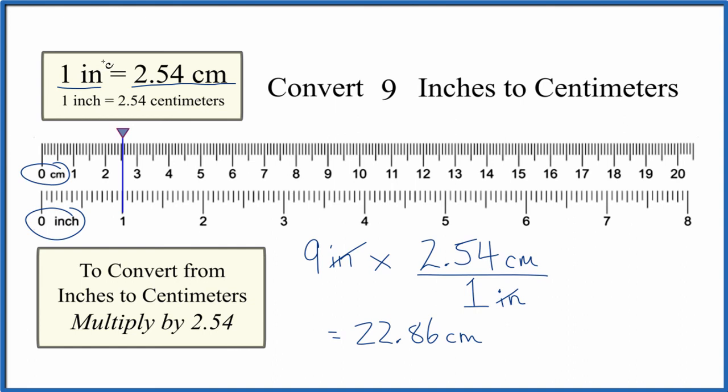So remember, 1 inch is 2.54 centimeters and to convert from inches to centimeters, you multiply by 2.54.